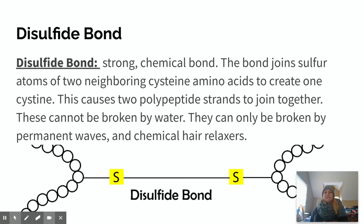And then lastly, we have disulfide bonds. Disulfide bonds are the only strong chemical bond within the hair cortex. The bond joins sulfur atoms of two neighboring cysteine amino acids. So cysteine is just one of those 20 amino acids and it creates cystine. This causes two polypeptide strands to join together.